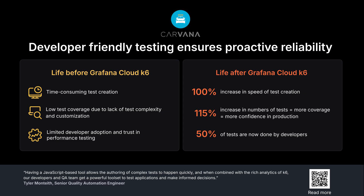Before Grafana Cloud K6, Carvana often faced barriers to performance testing. It was hard to adopt, time-consuming to create tests, and lacked customization options. As a result, the test coverage was low, and the developers didn't trust the results enough to make performance testing a core part of their workflow.